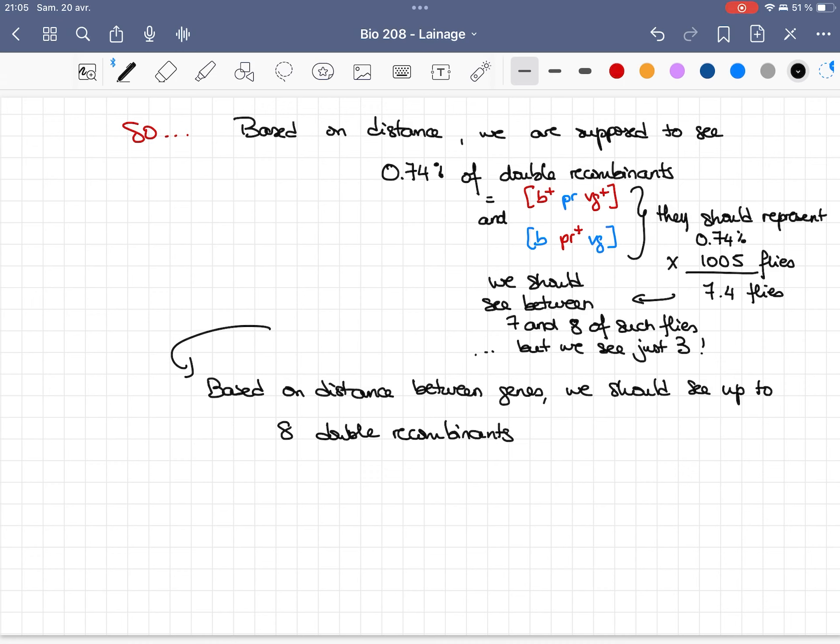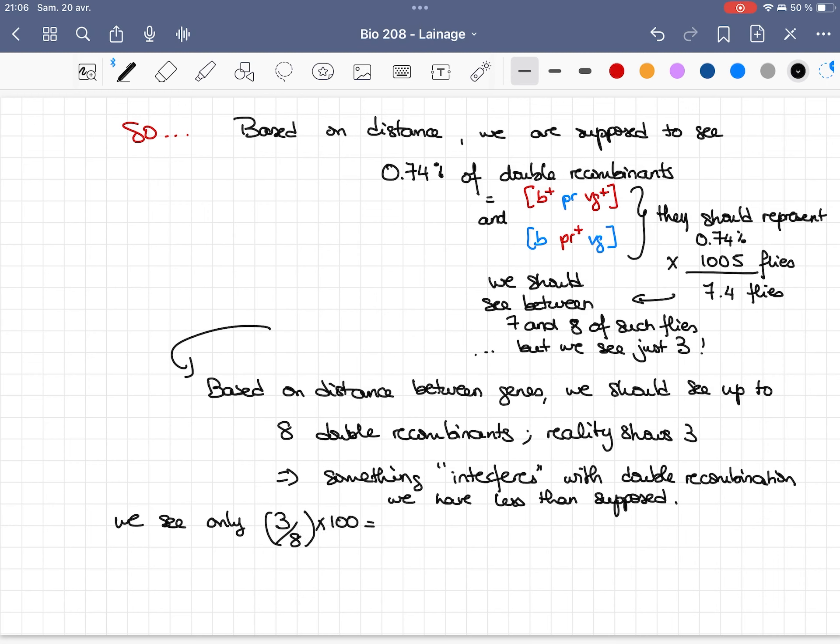So something interfered with the double crossing-over. So it means that once we have had one first crossing-over, the second one happened less often than supposed. So if we have just three instead of eight double recombinants, it means that we just have about 40%, so in reality 37.5% of the supposed double recombinants that were shown.